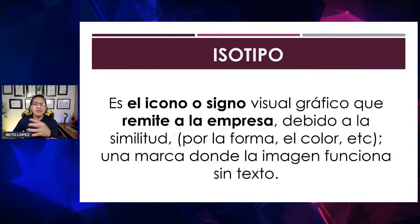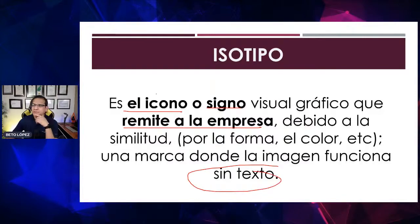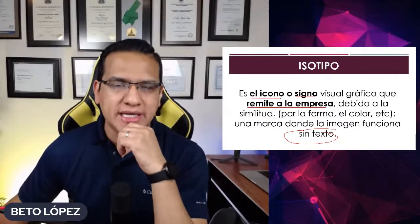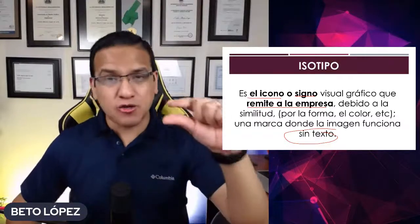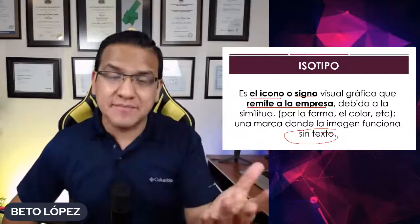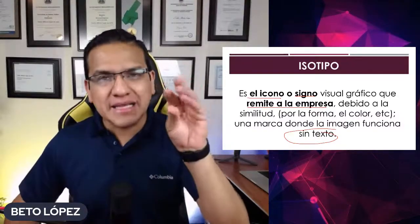Entonces, ¿cómo se llama el resto? El isotipo es el ícono o signo que remite la empresa. Por lo regular funciona sin texto. Cuando ustedes ingresan a la cámara de su celular, van a encontrar un ISO, que es la imagen como tal y la sensibilidad. El ISO, o la imagen, es netamente la imagen.